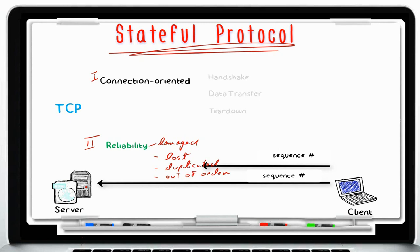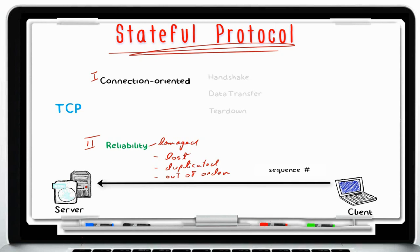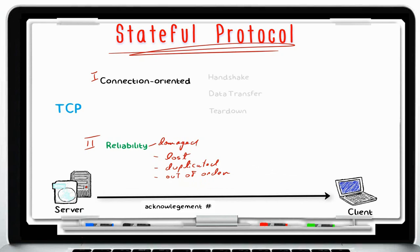When a packet is sent, a timeout starts on the client. If the client does not receive an acknowledgement within a certain time period, the timeout expires and the client resends the same packet. This process repeats until the client receives an acknowledgement, after which it transmits the next packet in sequence.